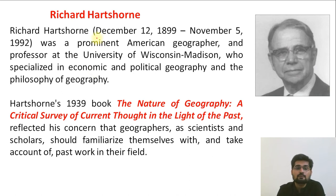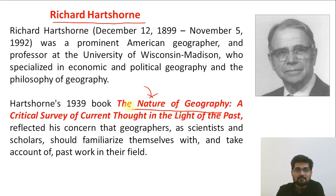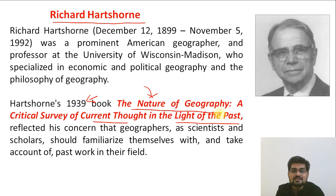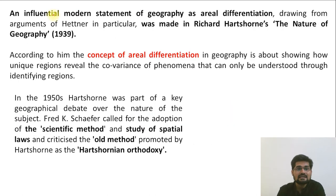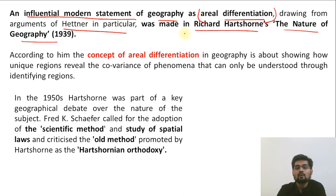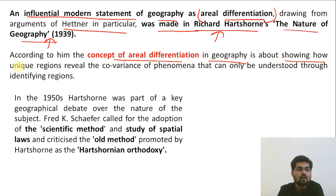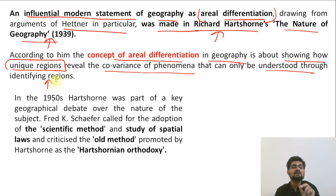One of the most important prominent scholars of the American school is Richard Hartshorne, known for his concept of areal differentiation and his work The Nature of Geography, published in 1939 as a critical survey of current thought in light of the past. He drew from Hettner's idea of chorology and gave an influential modern statement of geography as areal differentiation. According to him, areal differentiation in geography is about showing how unique regions reveal the covariance of phenomena that can only be understood through identifying those particular unique factors of each region.